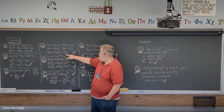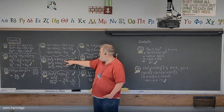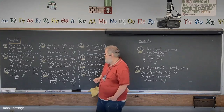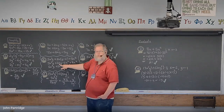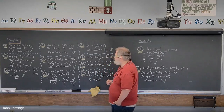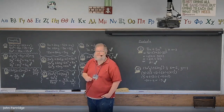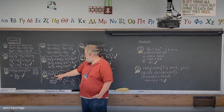Problem 5: 5x²y + 2x(y - x) + 8x². Distributive property on 2x(y - x): 2x times y is 2xy, and 2x times -x is -2x². Now the expression is 5x²y + 2xy - 2x² + 8x². Are there like terms? Yes — -2x² + 8x² = 6x². Final answer: 5x²y + 2xy + 6x².